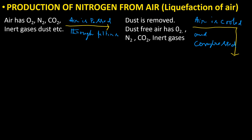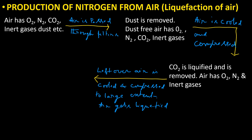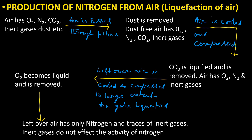This dust-free air is cooled and compressed. Carbon dioxide is liquefied and removed. The leftover air has oxygen, nitrogen, and inert gases. The leftover air is further cooled and compressed to a large extent so that air gets liquefied. Oxygen becomes liquid and is removed. The remaining air has only nitrogen and traces of inert gases, which do not affect the activity of nitrogen.